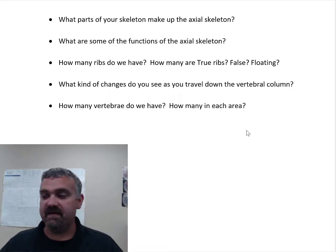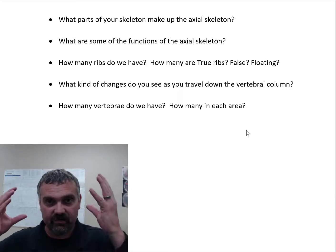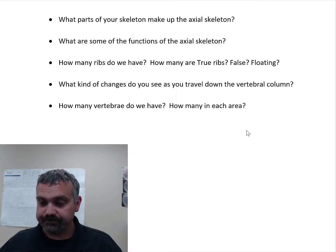But what are some of the functions of the axial skeleton? Protection, clearly first, you're protecting your brain with your skull, and you're protecting your heart and lungs with your rib cage and your sternum. And then obviously your spine plays a role in holding you erect, holding you upright in movement, but also protects your spinal cord. So to me, protection and then that base for movement is clearly important as well.